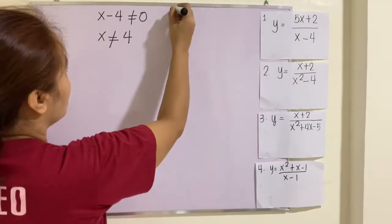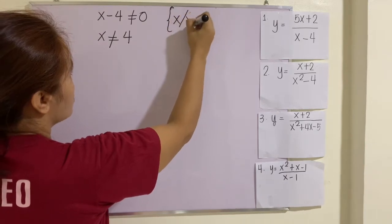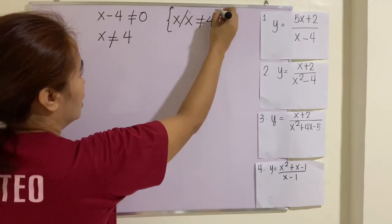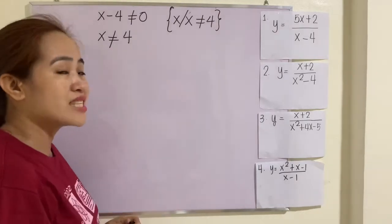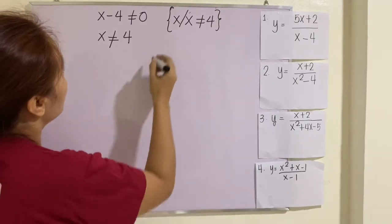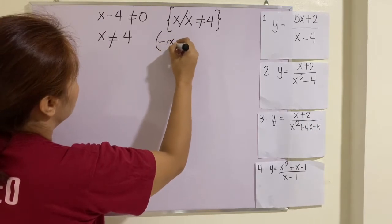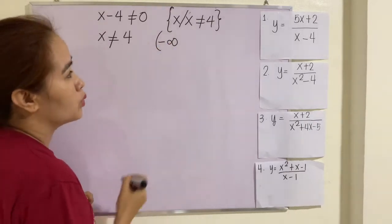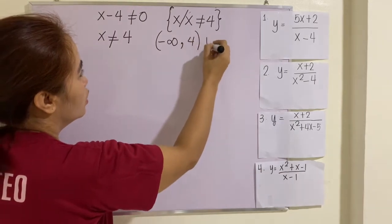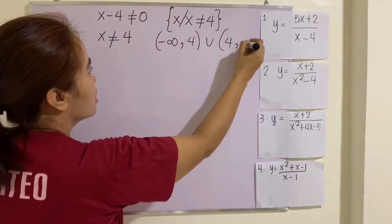In set notation, this is the set of all x's such that x is not equal to 4 — meaning all real numbers are included in the set except 4. For the interval, you begin with negative infinity, then comma 4, and then union 4, positive infinity.